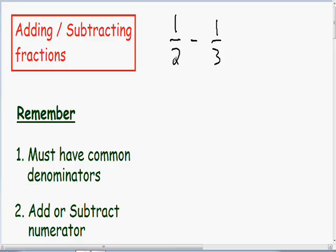Since this fraction has a denominator of 2 but doesn't have a 3, I'm going to multiply it by 3 — and whatever you do to the bottom, you have to do to the top. Since this fraction has a denominator of 3 but does not have a 2, I'm going to multiply this fraction by 2 — and whatever you do to the bottom, you do to the top. Now notice: in the first fraction we have a denominator of 3 times 2, which is 6, and in our second fraction we also have a denominator of 3 times 2, which is 6. So now we have a common denominator of 6.